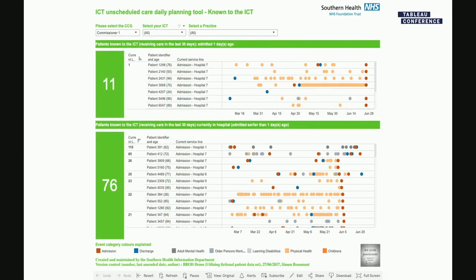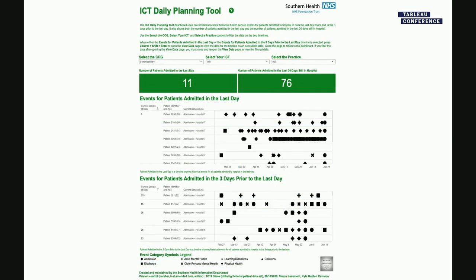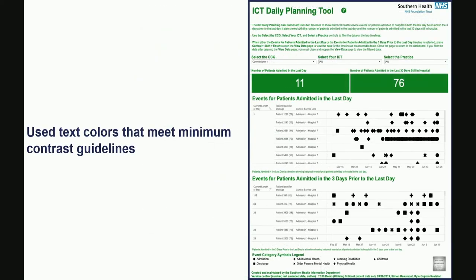So I took that dashboard and did my best to turn it into a more accessible version. First, I used text colors that meet the minimum contrast guidelines. I figured it needed to stay in a green theme, so I went to the NHS website and used their green color — it's NHS-appropriate and it happens to meet the contrast guidelines. Next, I showed the titles for all views and made sure those titles are explanatory, such as 'Events for Patients Admitted in the Last Day.'